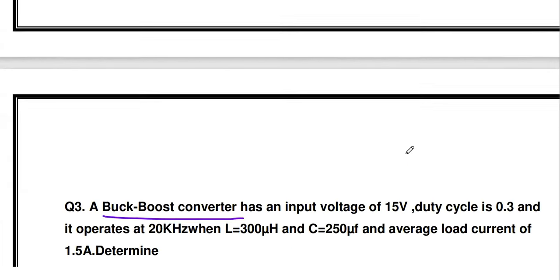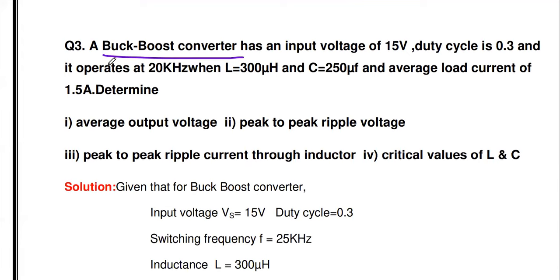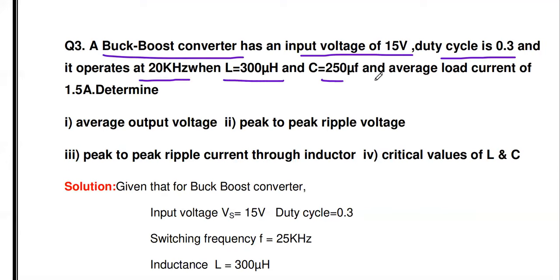The third problem is a buck-boost converter with input voltage 15V, duty cycle α = 0.3, operating frequency 20 kHz, inductor L = 300 μH, capacitor C = 250 μF, and average load current I0 = 1.5 A. Unlike the previous problems where we were given input and output voltage to find duty cycle, here the duty cycle is given directly and we must find the output voltage.